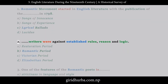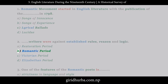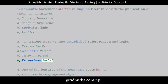Question 2: Writers were against established rules, reason, and logic. A. Restoration period, B. Romantic period, C. Victorian period, D. Elizabethan period.